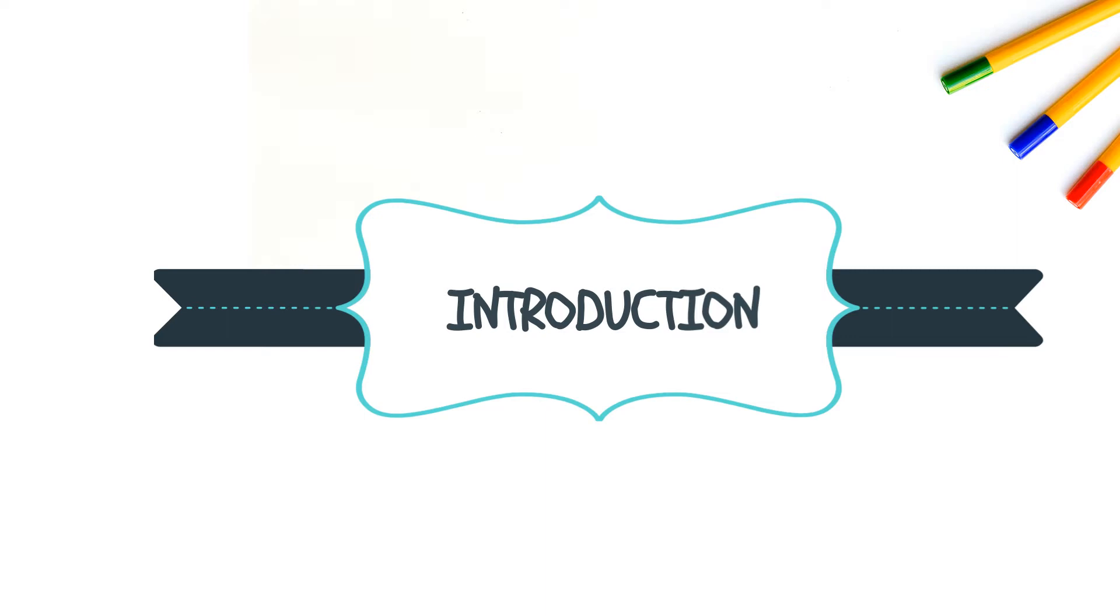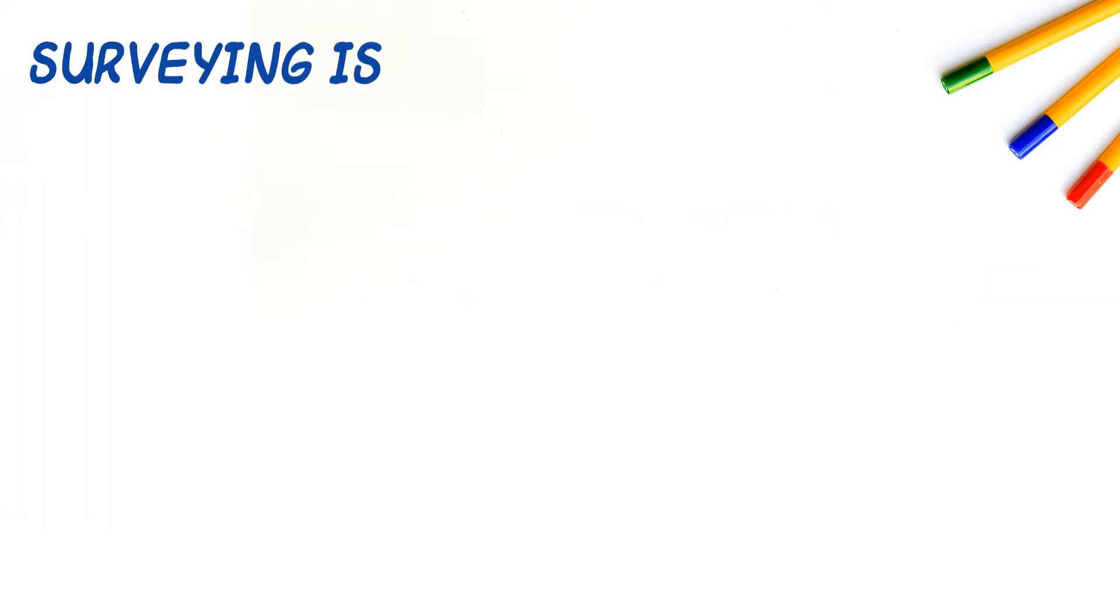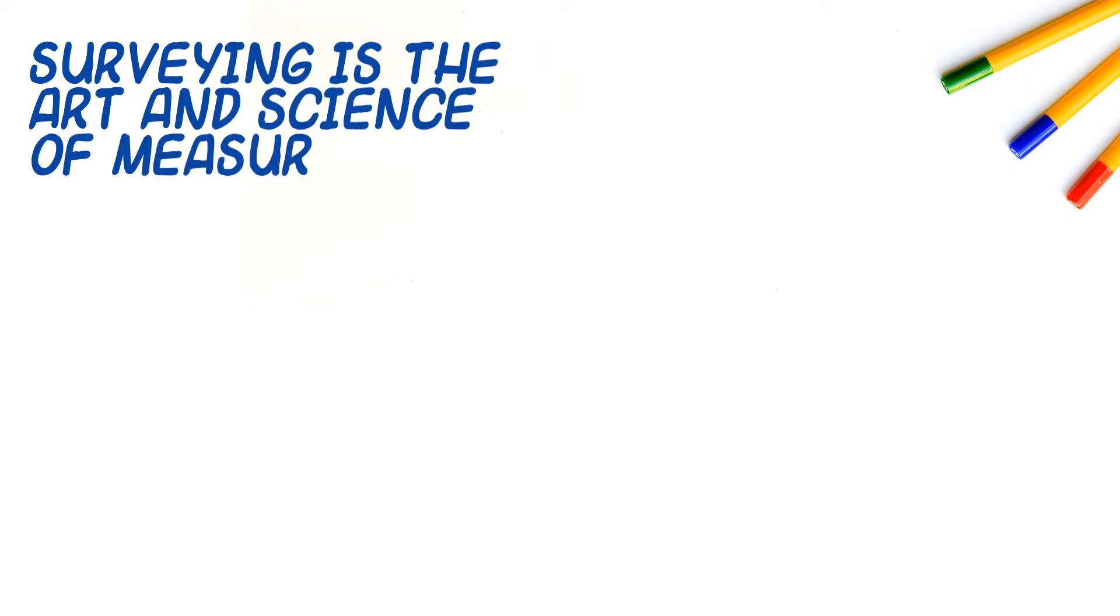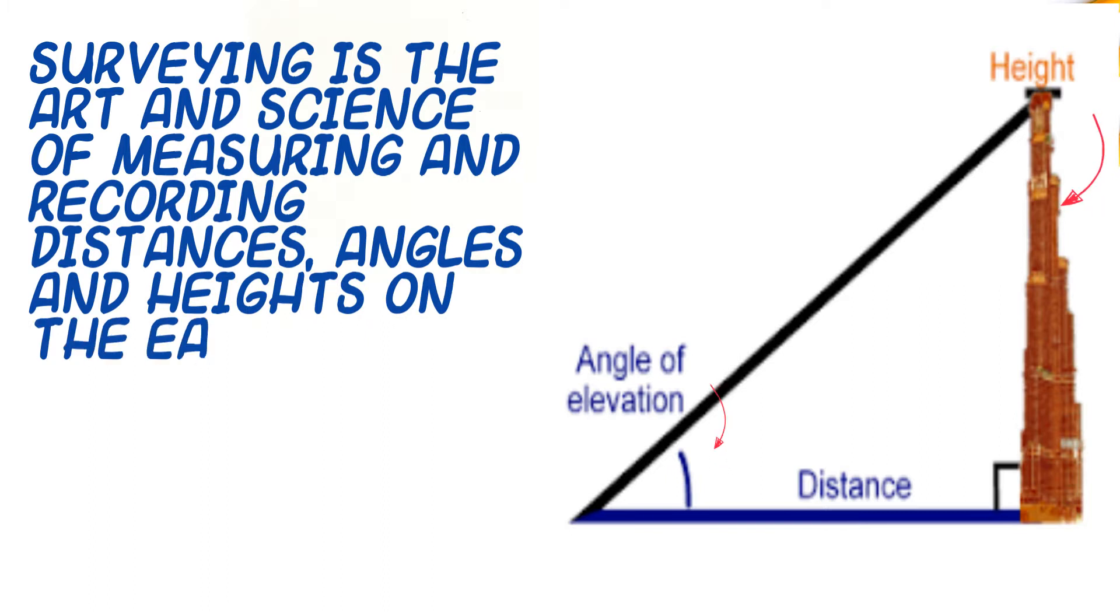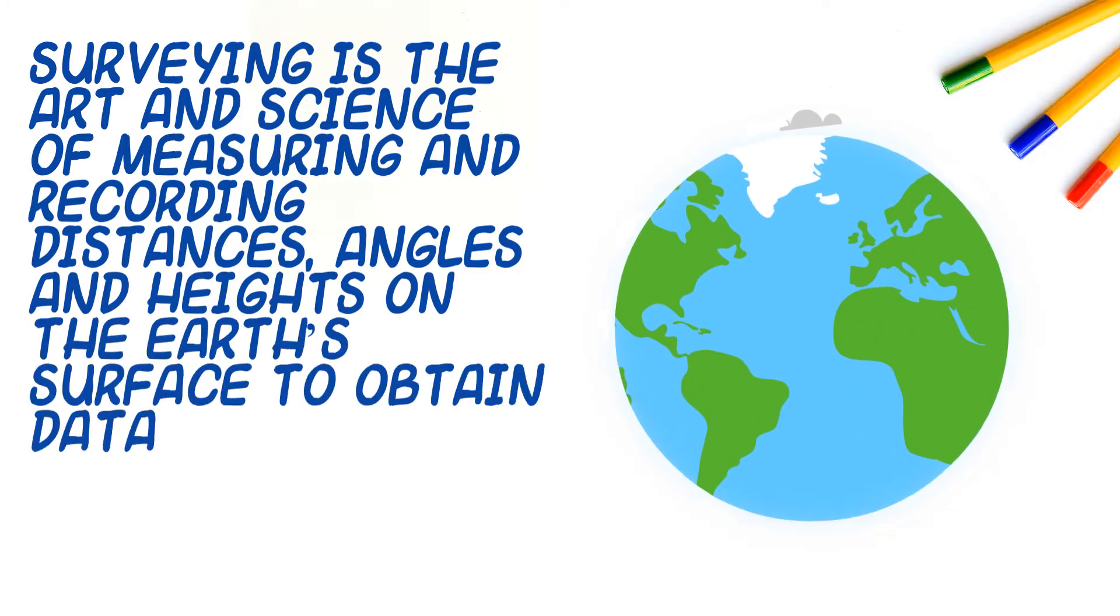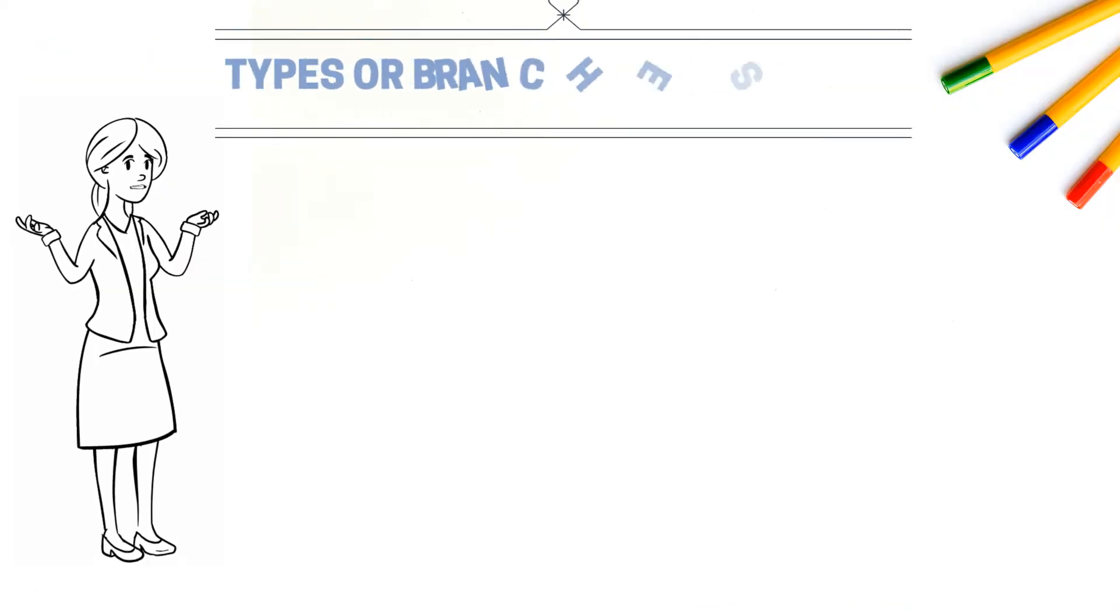Introduction. I'm going to give you the general meaning of survey. Surveying is the art and science of measuring and recording distances, angles, and heights on the earth's surface to obtain data from which accurate plans and maps are made.